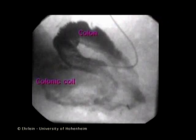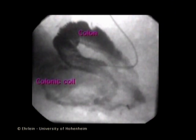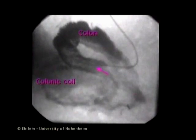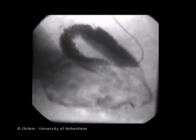The following video clips show the transport of chyme along the proximal colon and the filling of the colonic coil. Contrast medium was infused at the beginning of the second colonic loop. A peristaltic wave reaches the colonic loop, propelling chyme towards the colonic coil.